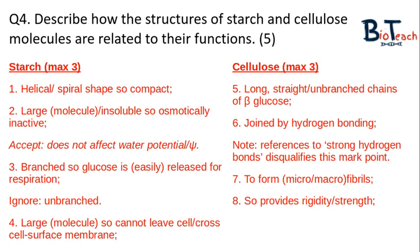Please note that the max three in the starch box means you can only get a maximum of three marks from starch points, because the question is about both starch and cellulose. I would say mention three points from starch and two to three from cellulose to get the full five marks. For cellulose, we would say it has long chains, unbranched with many microfibrils, and the 'so' part comes in when we talk about its strength as a structural component of cells. You have to mention both polysaccharides in order to get the full five marks.